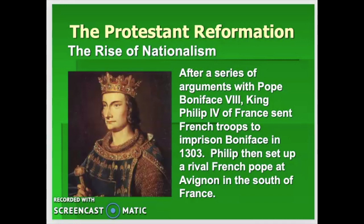Instead of backing down, Philip simply sent French troops to arrest the Pope and put him in prison. Pope Boniface was in prison for just a short time — only a couple of weeks — when Italian troops freed him, and he died soon after, apparently of shock. Then Philip, instead of giving up, simply appointed one of the Catholic cardinals in France as the new Pope. For a while after this, there was a split papacy, with one Pope in Avignon, France, and another Pope in Rome.